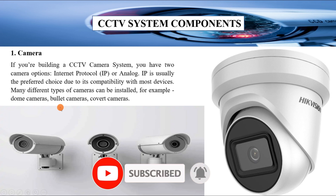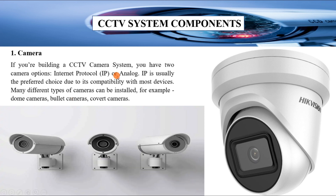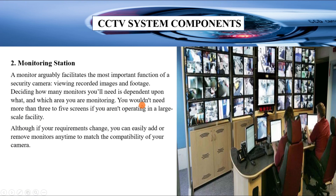Number one is the camera. If you are building a CCTV camera system, you have two options: an Internet Protocol IP camera or an analog camera. IP cameras are usually the most preferred choice due to their compatibility with most devices. Many different types of cameras can be installed, for example dome cameras, bullet cameras, and covert cameras.